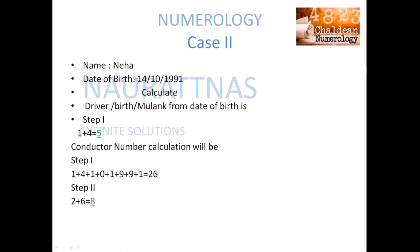Now we will study case 2, which is of Neha. Neha's date of birth is 14th October 1991. Now we will calculate Neha's driver number, that is her birth or Mulank number. Step 1 is calculating the birth number — she is born on the 14th, so 1 plus 4 equals 5. The driver number of Neha will be 5. Now we will calculate her conductor number by adding the whole date of birth.